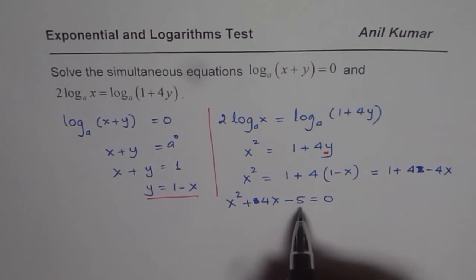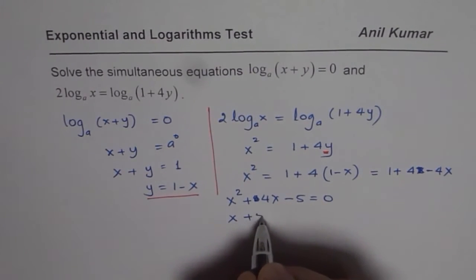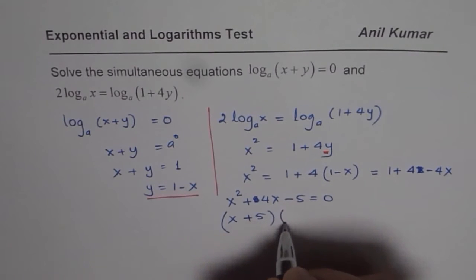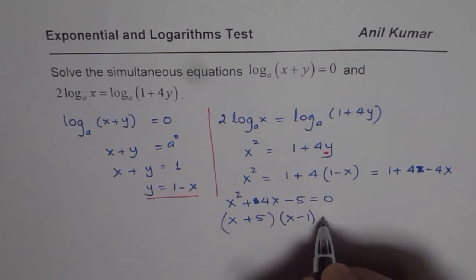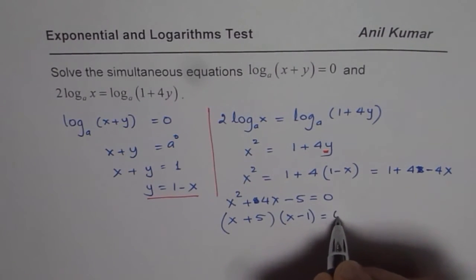Now you can factor this equation. Product we need negative 5, sum as plus 4. So we could write this as (x + 5) times (x - 1). That will give us product of minus 5 and sum of plus 4. So equals 0.